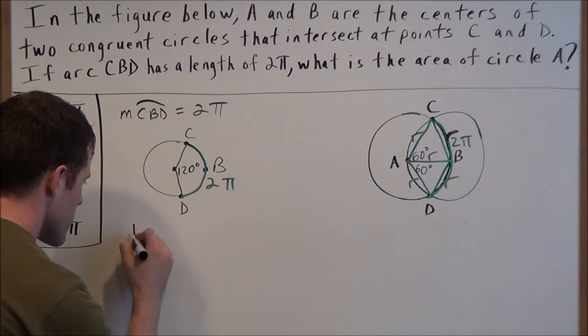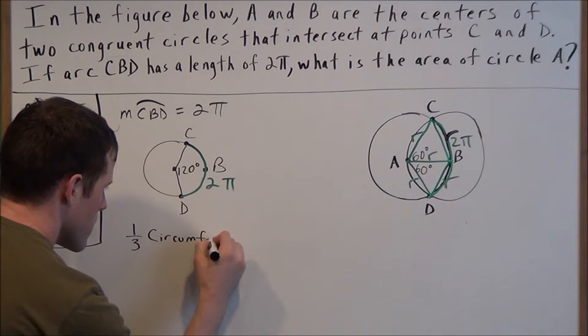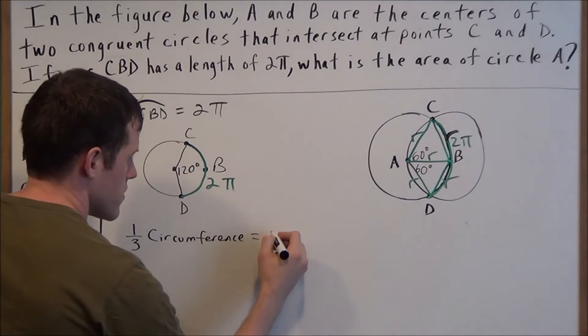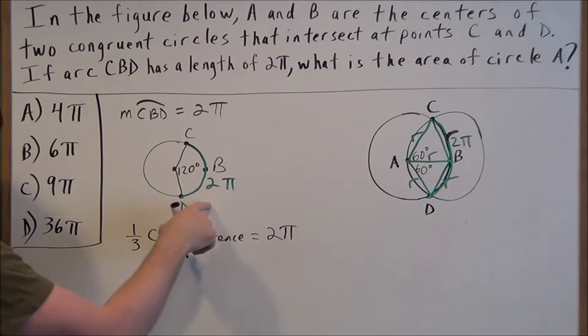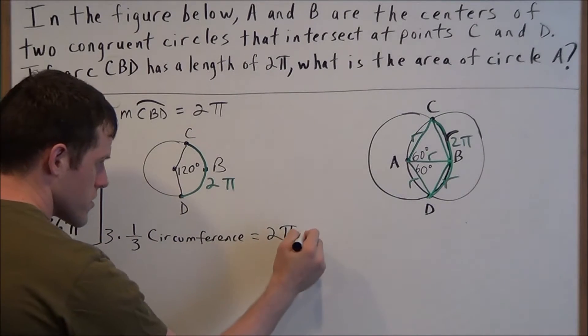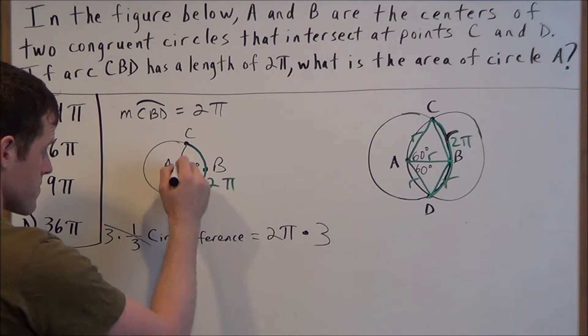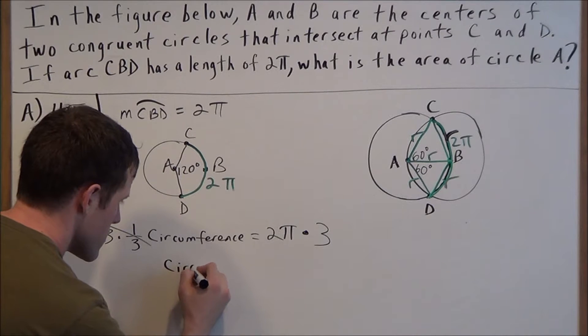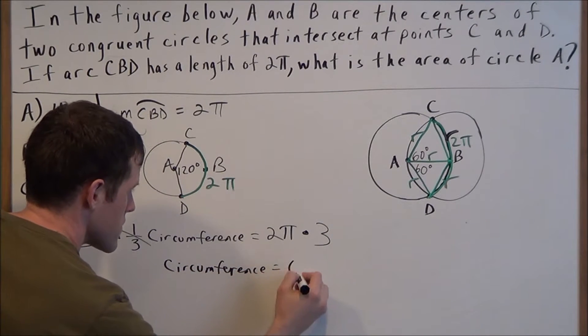So one third of the circumference is equal to 2π. That tells us that the circumference of circle A is equal to 6π.